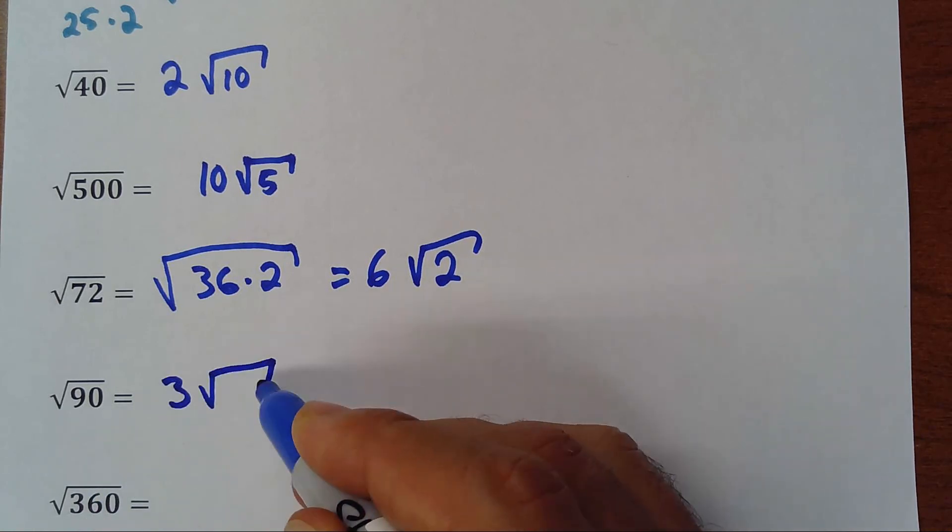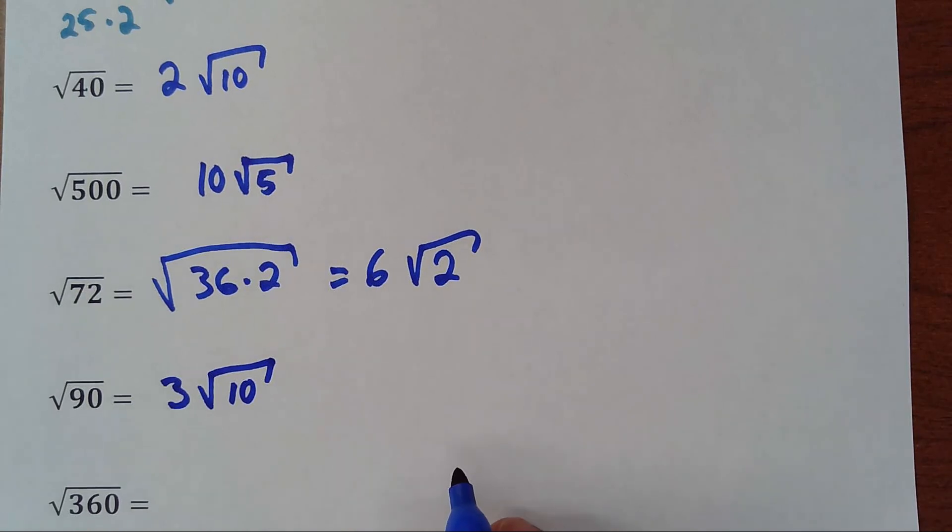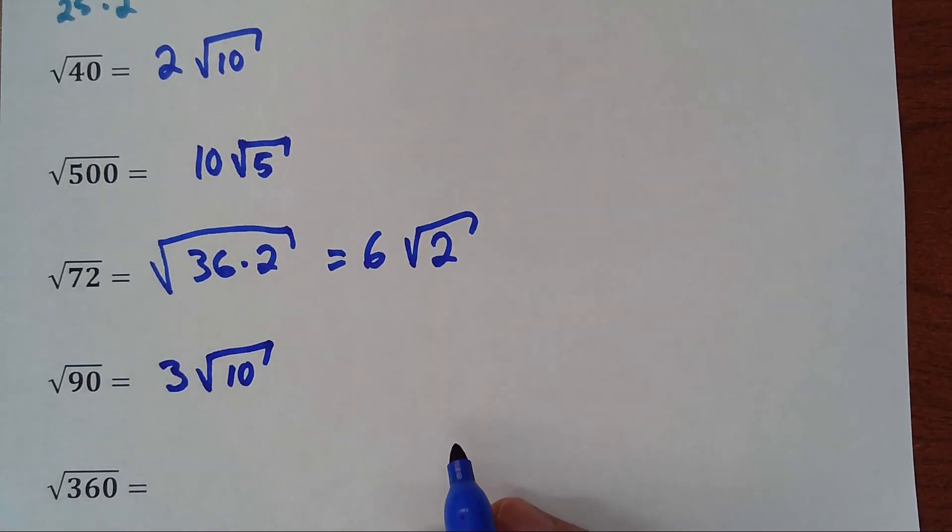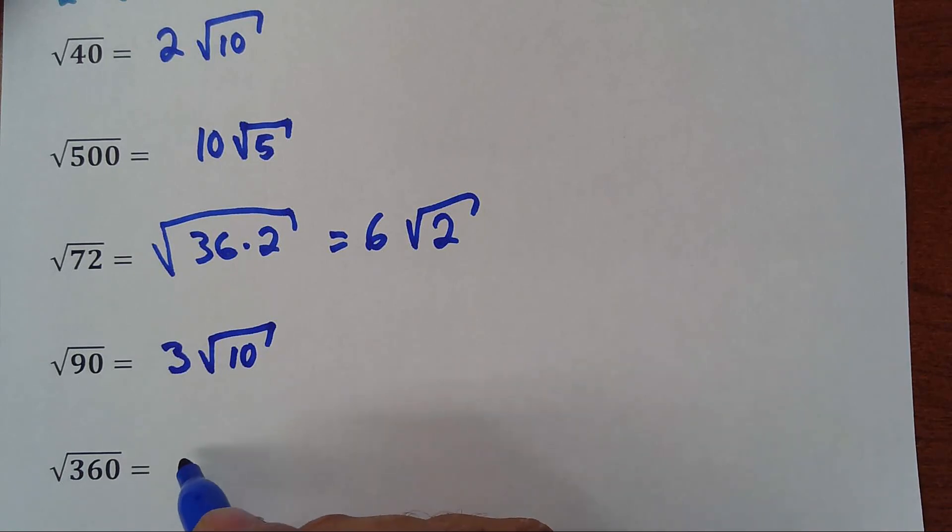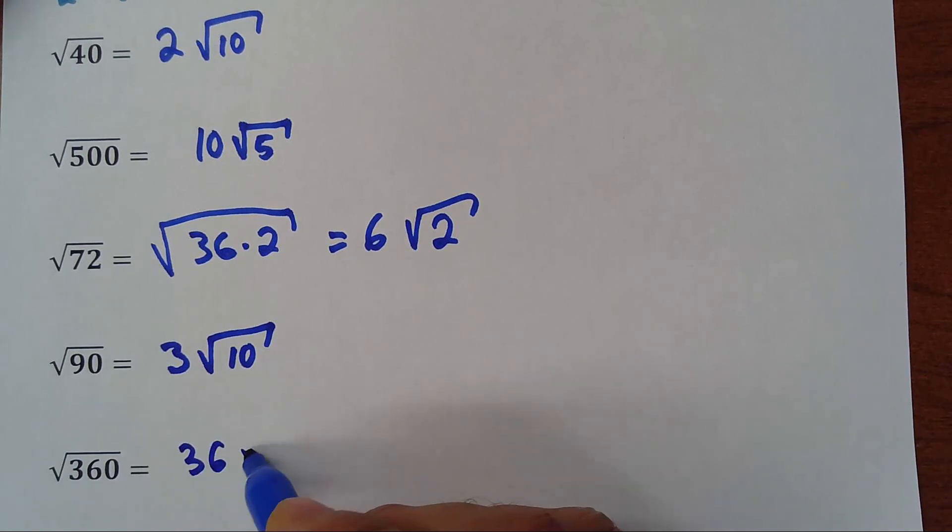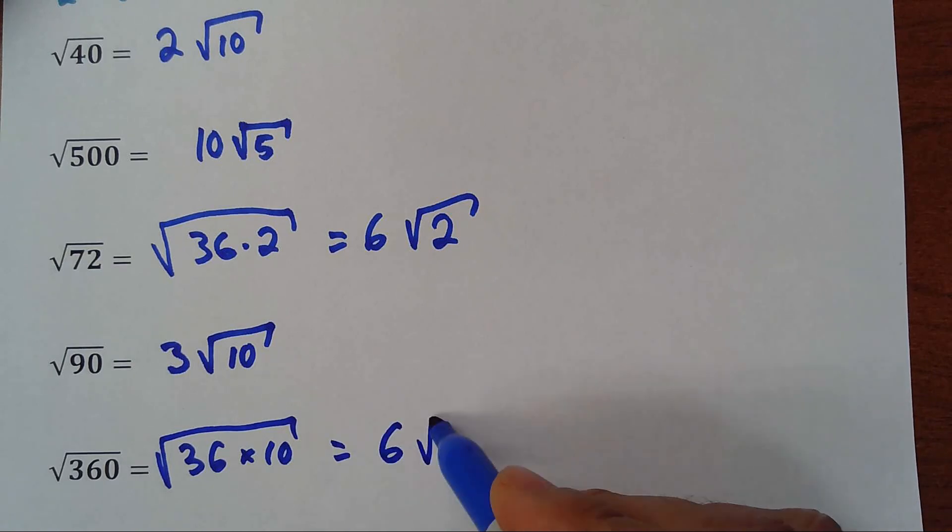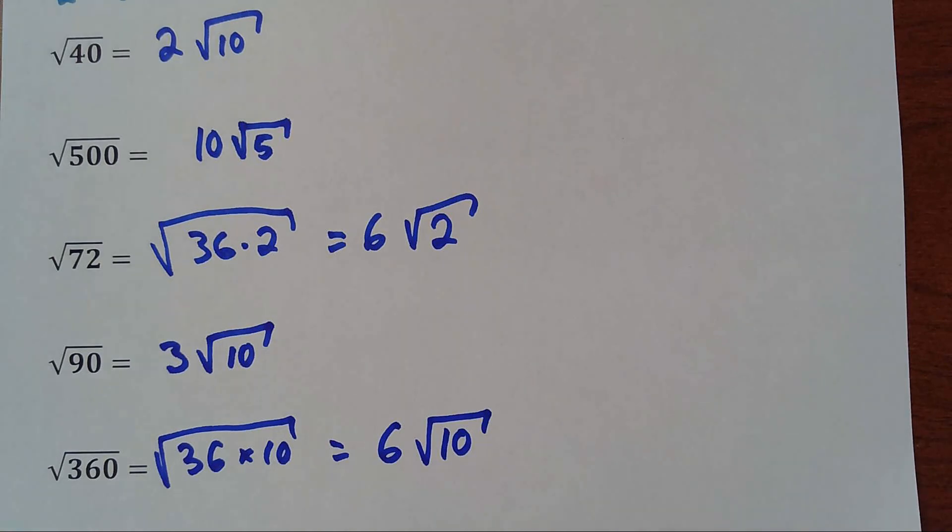360 is basically 36 times 10 inside of the root, so that will be 6 square root of 10. That's it. Practice this, and once you get the practice, it will be very easy for you.